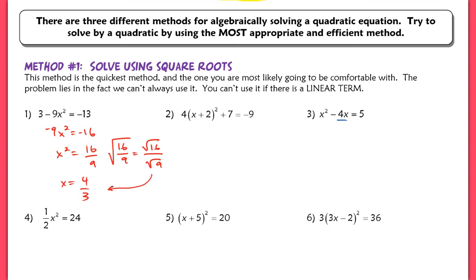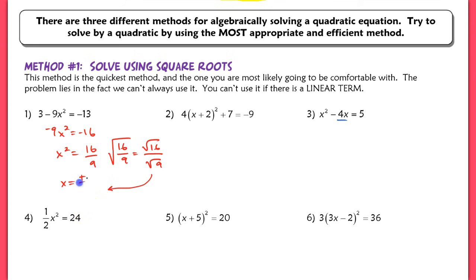You shouldn't be using a calculator for basically any of this homework until we tell you to. If you answer this as 4 thirds, this is actually technically wrong because we have two solutions here — positive and negative 4 thirds. So always make sure that you have two unique solutions anytime you have a quadratic.